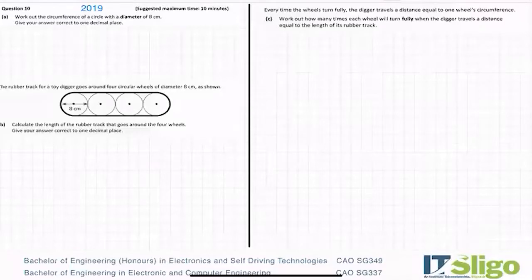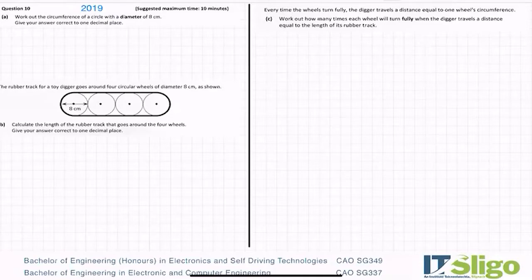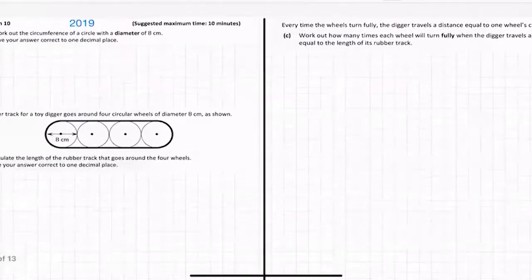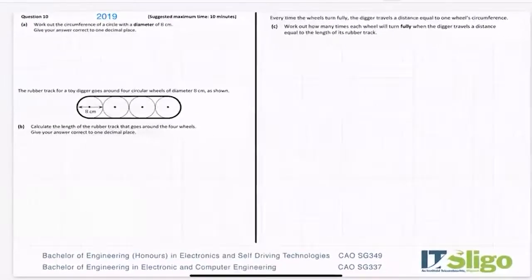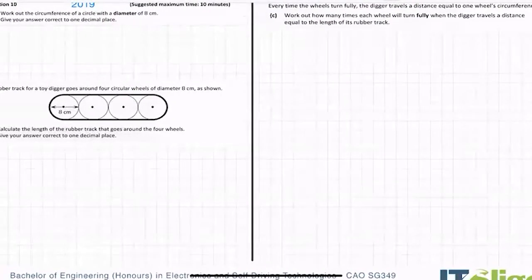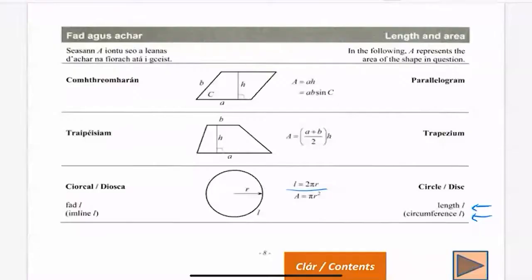Right. Let's have a look at the 2019 area and volume question on the junior cert paper.